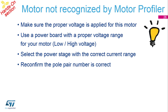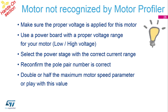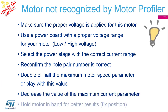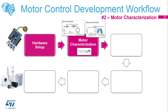If any of those three parameters — voltage, pole pairs, or maximum speed — are wrong, it won't characterize the motor correctly. You may have to play around with the motor speed value if you've exceeded the motor's designed maximum. Also make sure the motor is stable when doing the test, because any inertial forces from it twisting on the desk can corrupt the readings. That's the motor profiler module of the System Workbench tool.